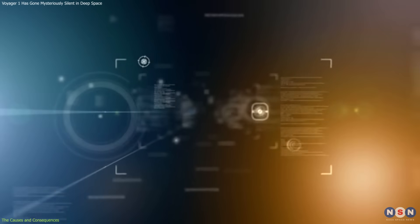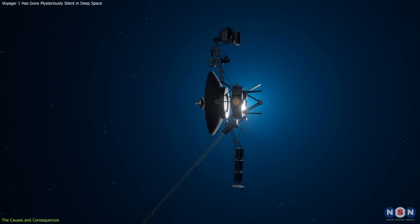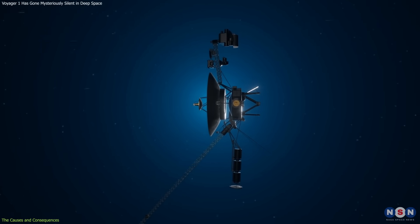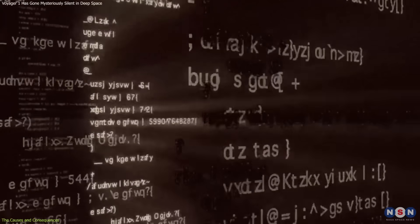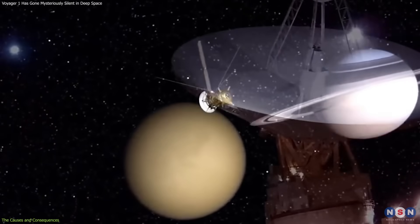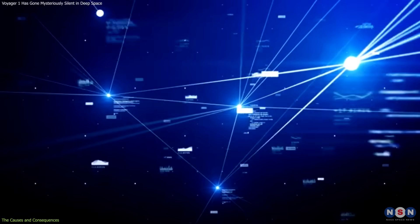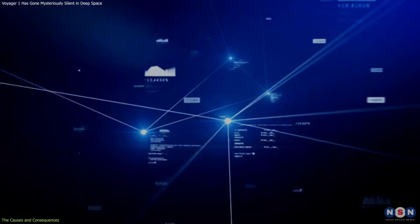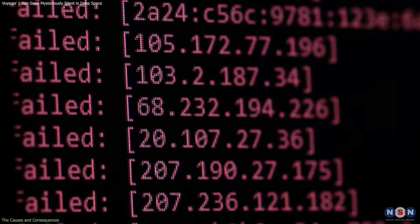Finally, the software. Voyager 1 is running on very old and complex software which was designed and coded in the 1970s. It controls the functions and operations of the spacecraft, such as collecting and transmitting data, executing commands, and managing errors.